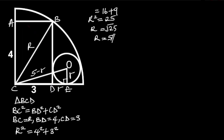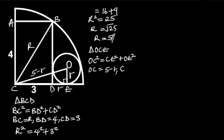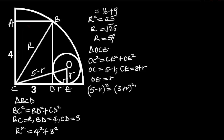Next, let's consider triangle OCE. Triangle OCE is a right triangle. So, from Pythagoras' theorem, OC squared is equal to CE squared plus OE squared. OC is equal to 5 minus r, CE is equal to 3 plus r, and OE is equal to r.